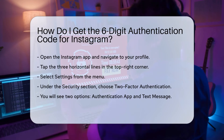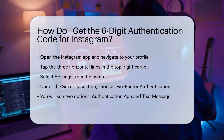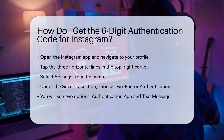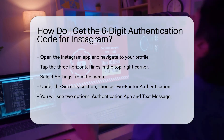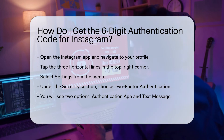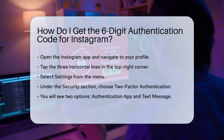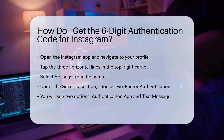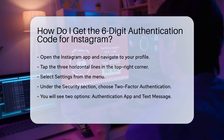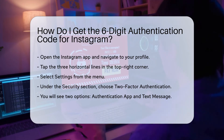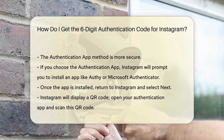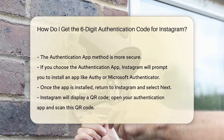First, open the Instagram app and navigate to your profile. Tap the three horizontal lines in the top right corner. Select Settings from the menu. Under the Security section, choose Two-Factor Authentication. You will see two options: Authentication App and Text Message.